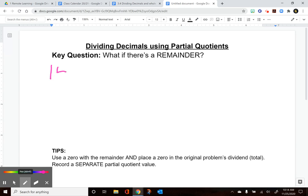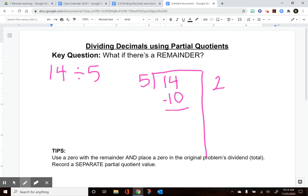The first problem is 14 divided by 5. We're looking at how many fives go into 14. With the partial quotient strategy you use whatever numbers you're comfortable with. I know I can do two groups of five which is 10, but having four extra to be shared between five people means that's the remainder. So now what do we do?